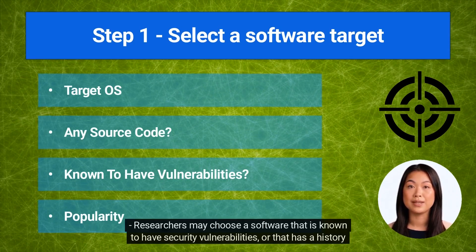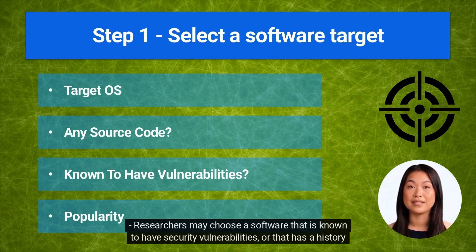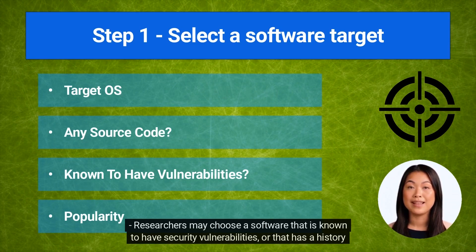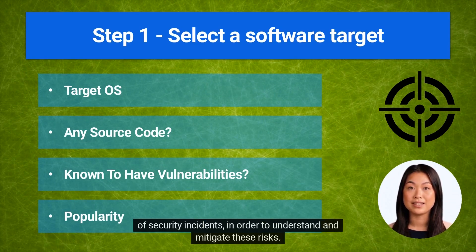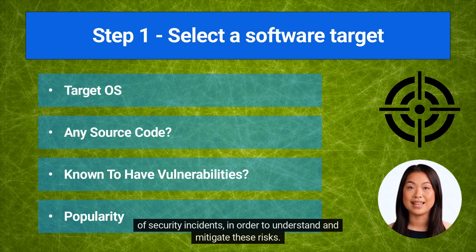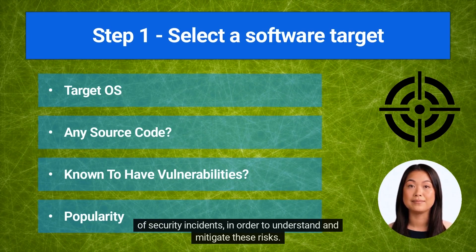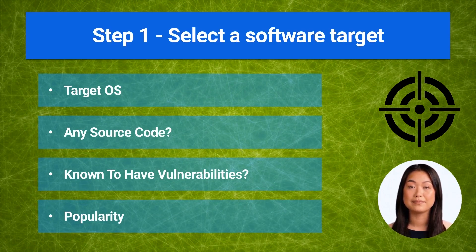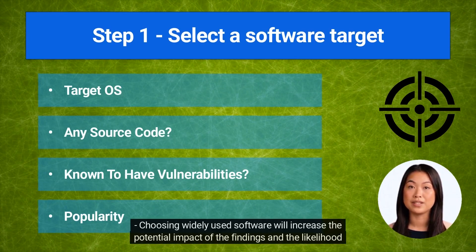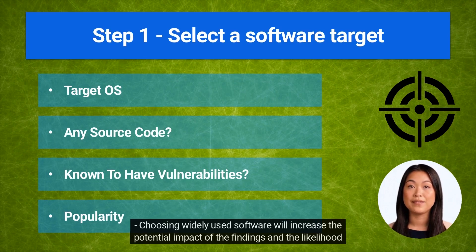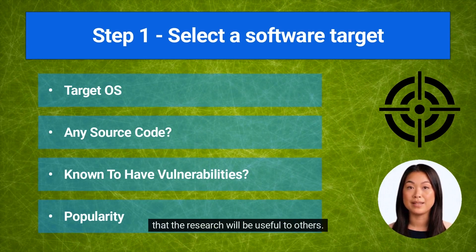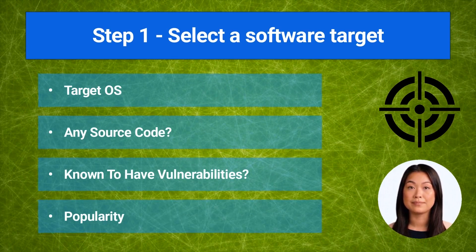Researchers may choose a software that is known to have security vulnerabilities, or that has a history of security incidents, in order to understand and mitigate these risks. Choosing widely used software will increase the potential impact of the findings and the likelihood that the research will be useful to others.